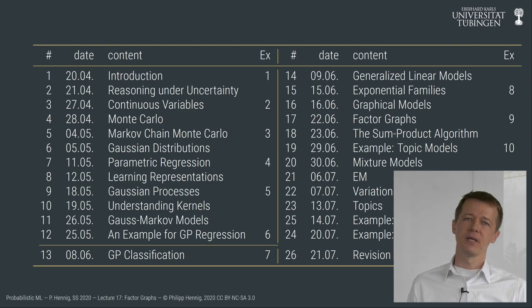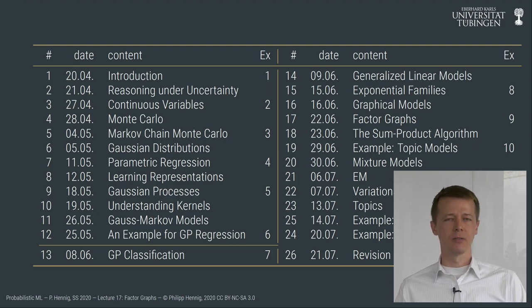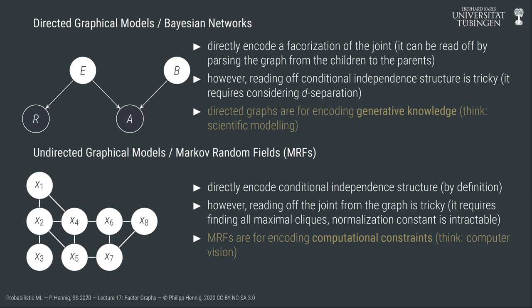In the last two lectures we began to move away from the purely Gaussian framework. We first encountered exponential family distributions, under which inference remains tractable in some sense. Then in the last lecture we returned to conditional independence and encountered two different classes of graphical models, which allow a manual design process for thinking about conditional independence when building a machine learning algorithm. Today we will examine their weaknesses and extend them into a framework for automated inference.